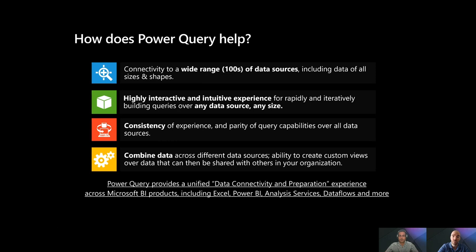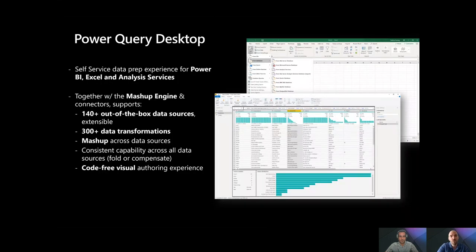Power Query is the unified data connectivity and preparation experience and technology from Microsoft that ships across eight or more different Microsoft products. It provides over 140 out-of-the-box connectors or data sources, which are extensible. We provide 300 or more data transformations — things like filters, pivots and unpivots, spreading columns, replacing values, removing duplicates, and more. This is also an extensible set.